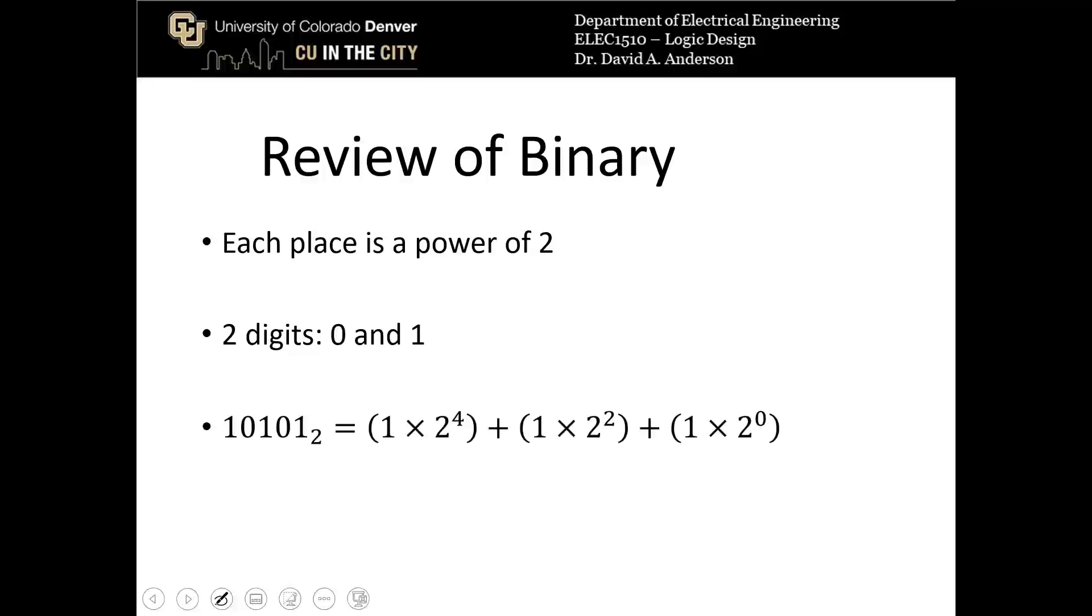So for example, the number 10101, which looks like ten thousand one hundred and one, but it's a base 2 number because it has this little 2 subscript, is 1 times 2 to the 4th, because this leading 1 is in the 4th place.